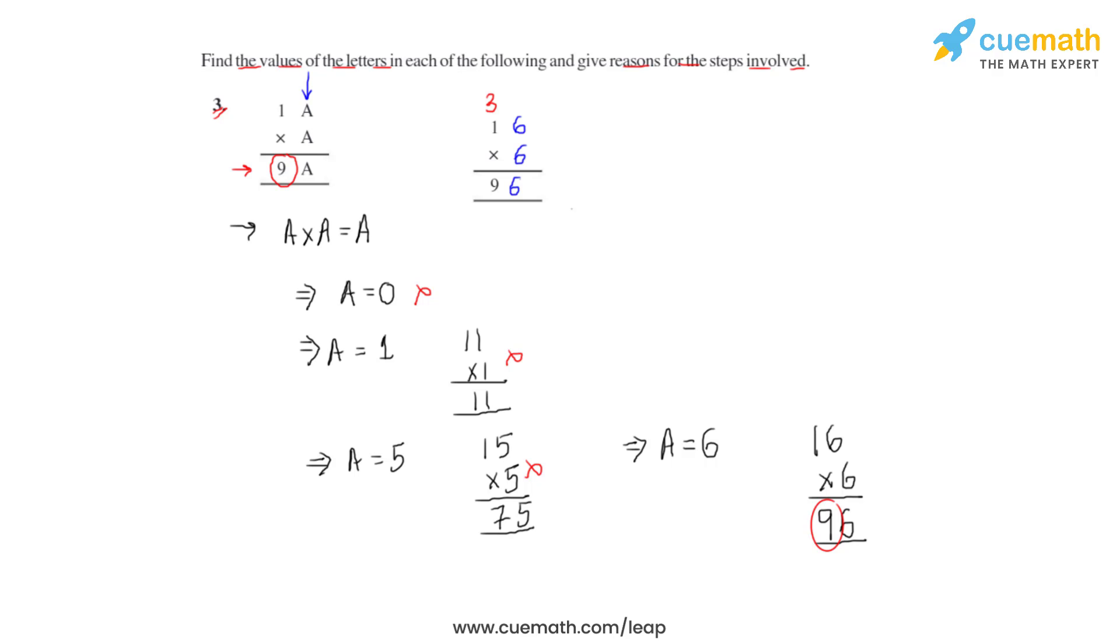If we observe the product we got here, the blue colored digits represent the value of a, and the red colored 3 represents the carry.